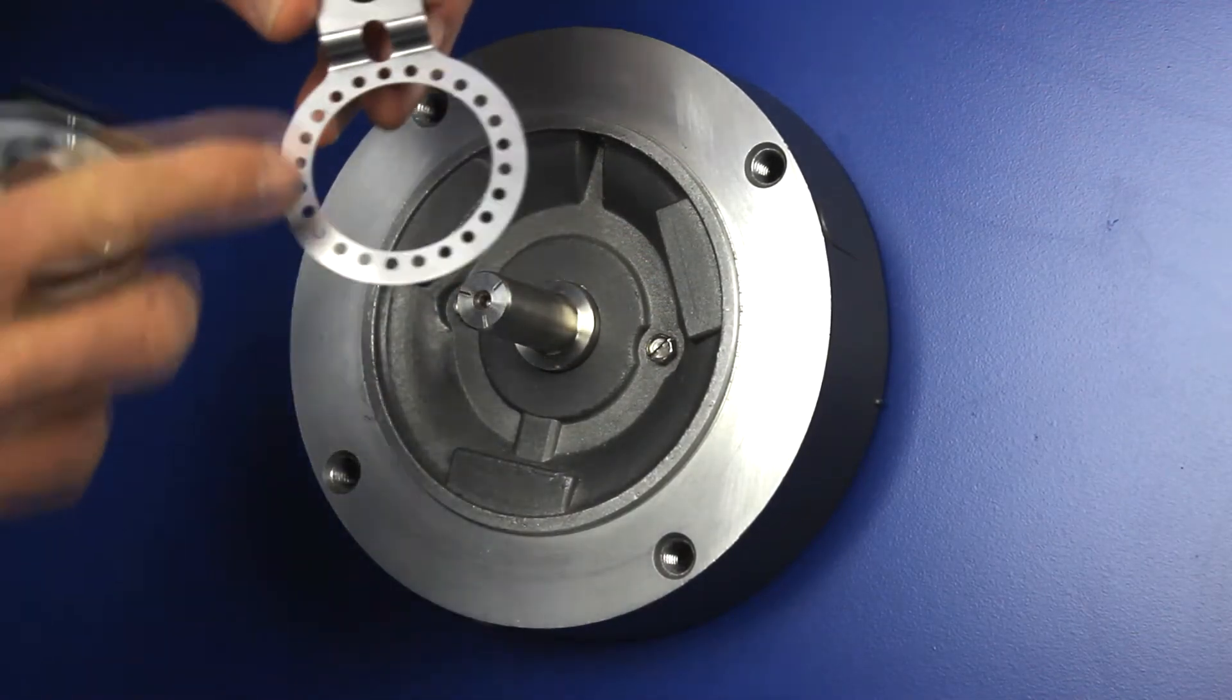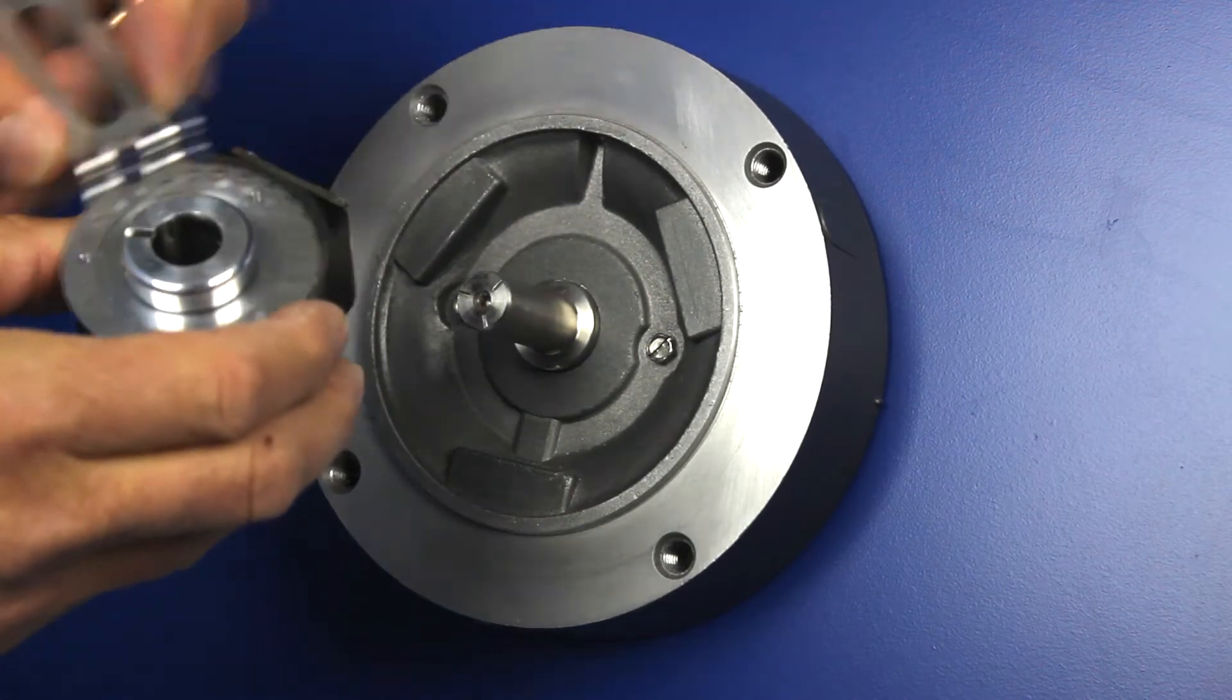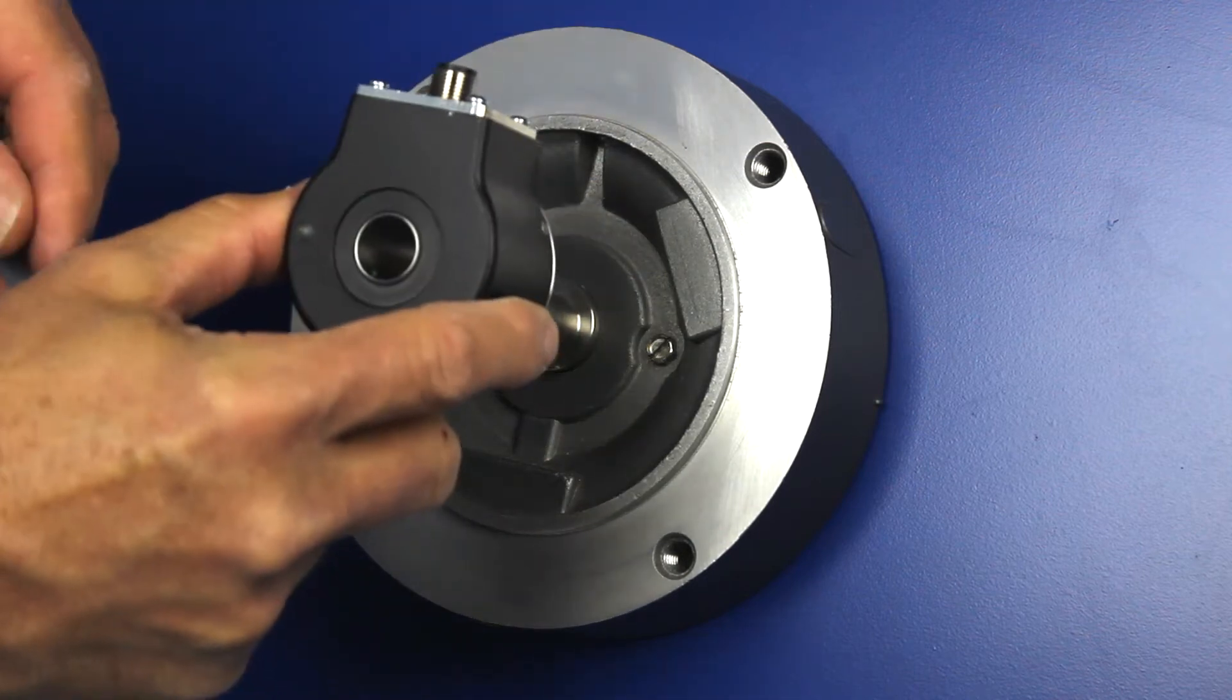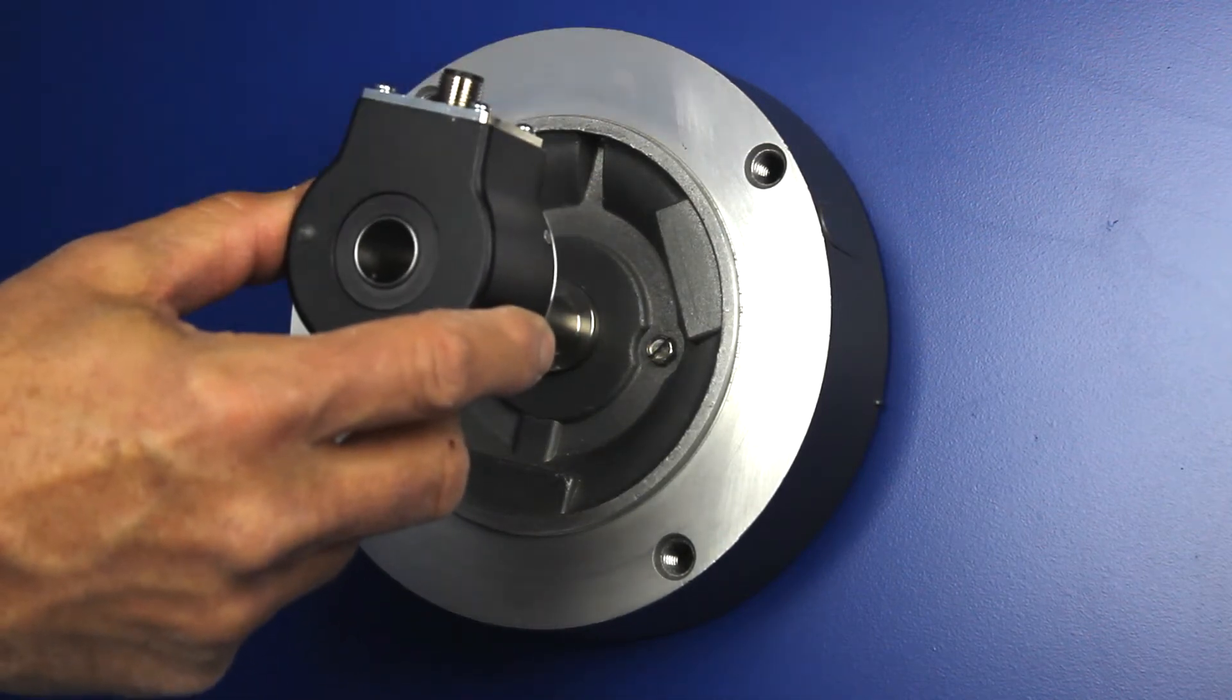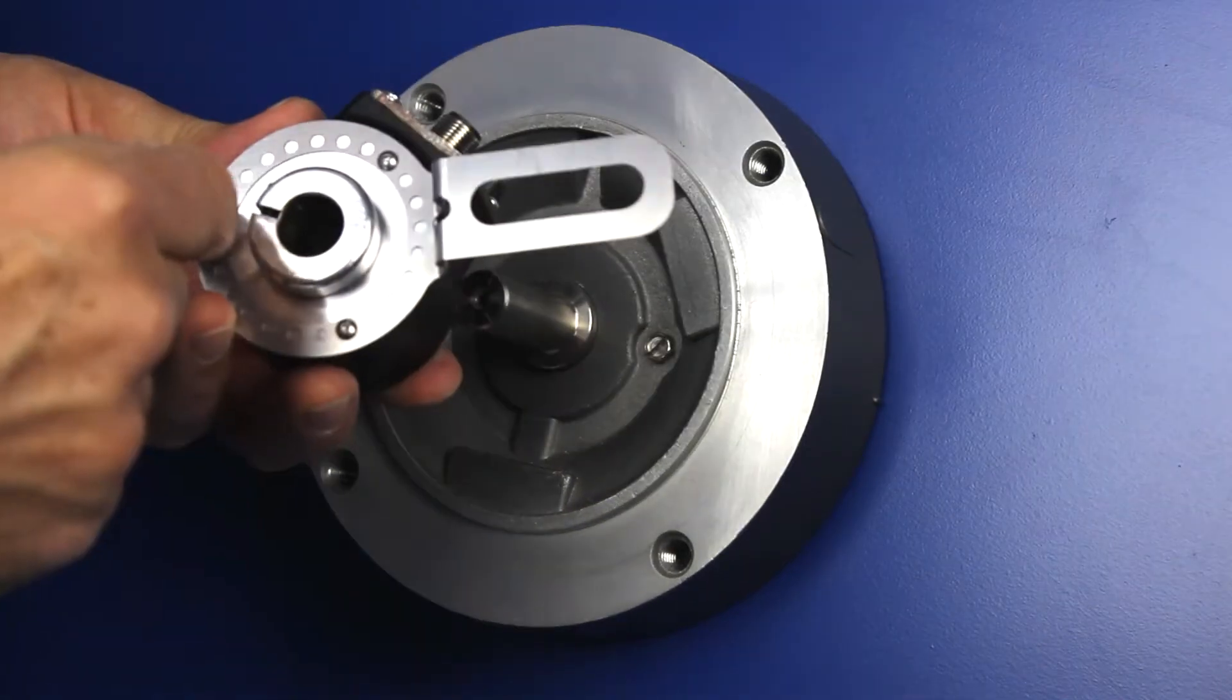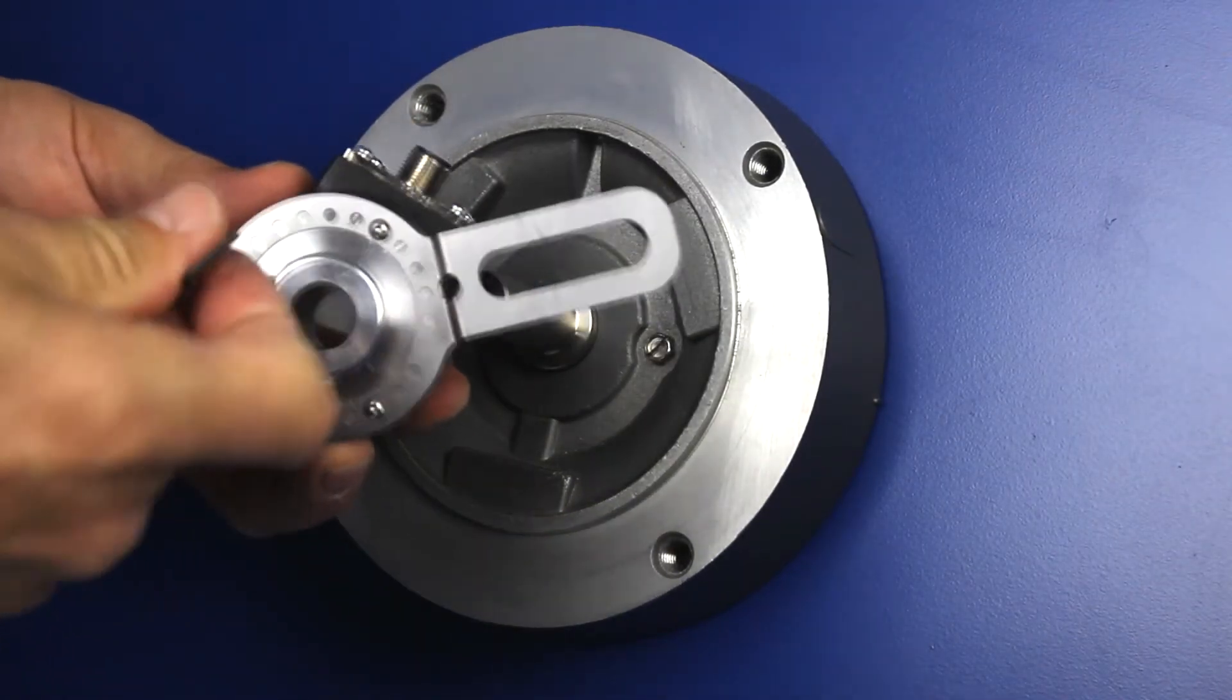The flex mount is designed to allow for orientation at a variety of angles. For this demonstration, we'll install it with the encoder connector at the 12 o'clock position and the flex mount at the 10 o'clock. Make a test fit to align the tether to the correct location and then attach the flex mount to the encoder.